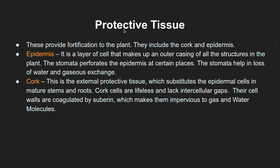Epidermis is one type of protective tissue where the cells make an outer covering of the structure. For example, if it is a leaf, the outermost layer is epidermis. If it is a stem, the outermost layer will be epidermis, and of course root will also have it. The reason we are talking about this as a specialized structure in terms of protection is because it has a small cellular structure called stomata.